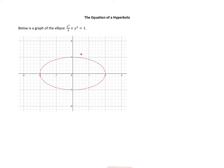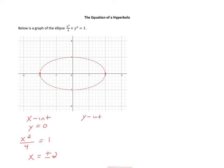If you have an equation like this and you want to find the x and y intercepts without using a graph, it's fairly simple. For the x-intercept, you set y equal to 0 and solve for x. After multiplying both sides by 4 and taking the square root, you get two solutions: plus or minus 2. Likewise, for the y-intercept, you set x equal to 0 and solve for y, getting plus or minus 1.